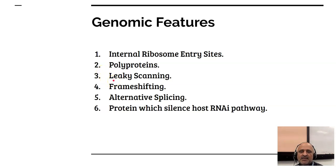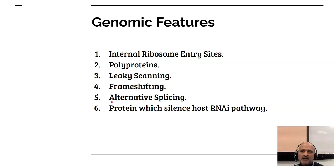Viruses utilize leaky scanning, which means they cause a mismatch in the scanning of the RNA molecule, resulting in multiple proteins from a single mRNA molecule — contributing to their mutability. Another feature is frame shifting, which allows a single mRNA molecule to encode multiple proteins by having multiple start codon sites. Some viruses employ alternative splicing in which elements of the RNA are spliced alternatively to produce a combination of different proteins.